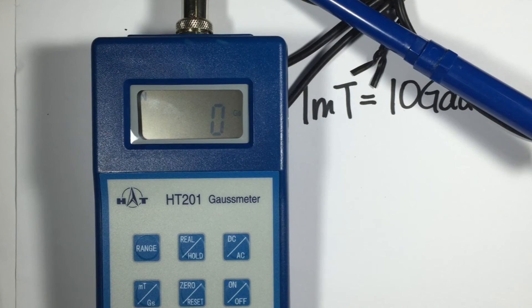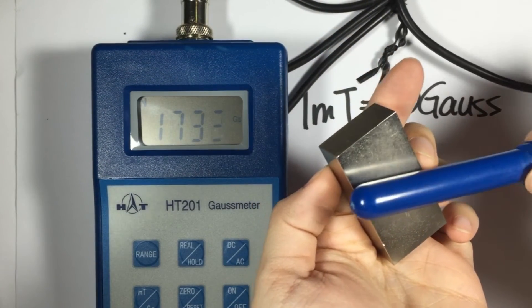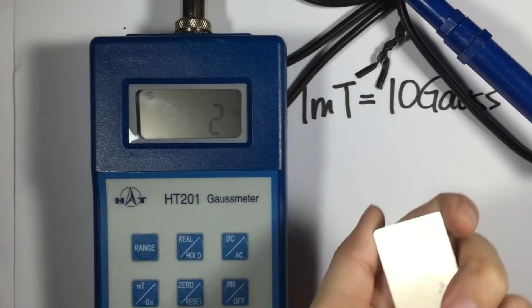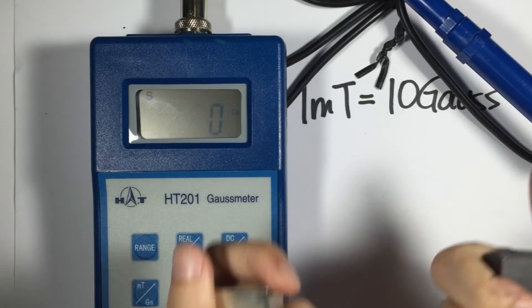And then we measure the neodymium magnet. And it can go as high as 1,800. So we have a neodymium magnet that can get up to 1,800, and a ferrite magnet of the same size that can get up to 500.